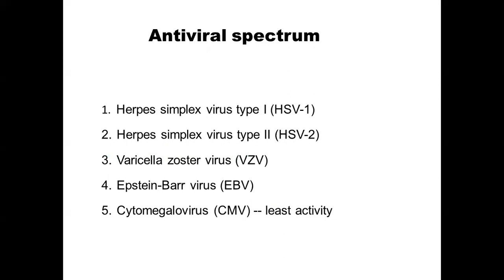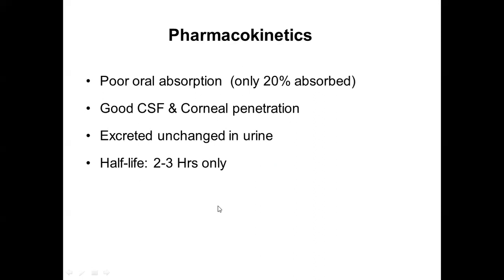The antiviral spectrum includes all the herpesviruses — HSV1 and 2, varicella zoster, herpes zoster, EBV, and CMV. CMV has the least activity. Regarding pharmacokinetics, it has poor oral absorption — only 20% is absorbed by the oral route. It has very good CSF and corneal penetration. It is excreted unchanged in the urine and the half-life is around two to three hours, so you may require at least four times a day dosage.